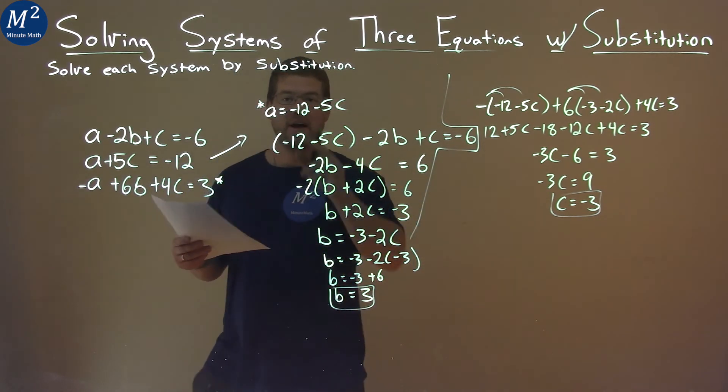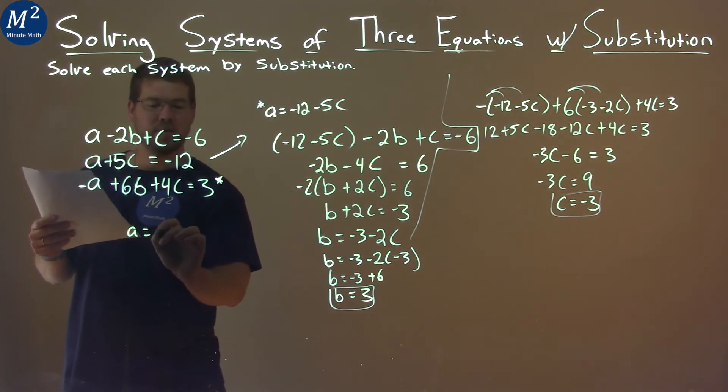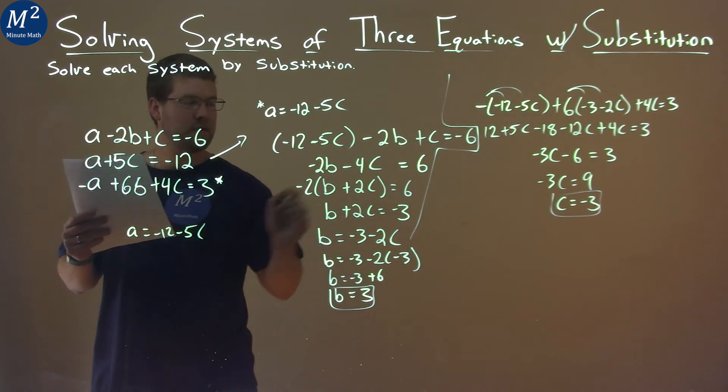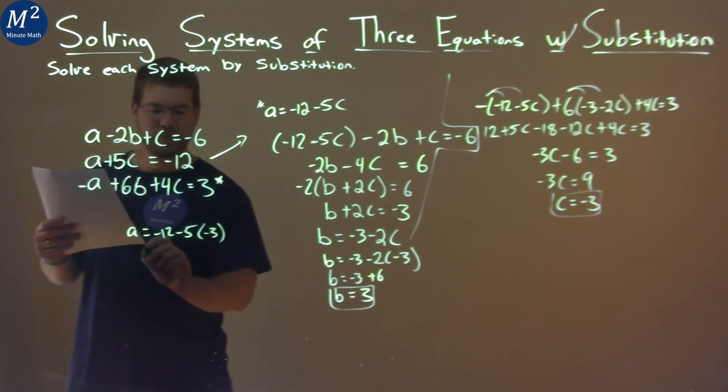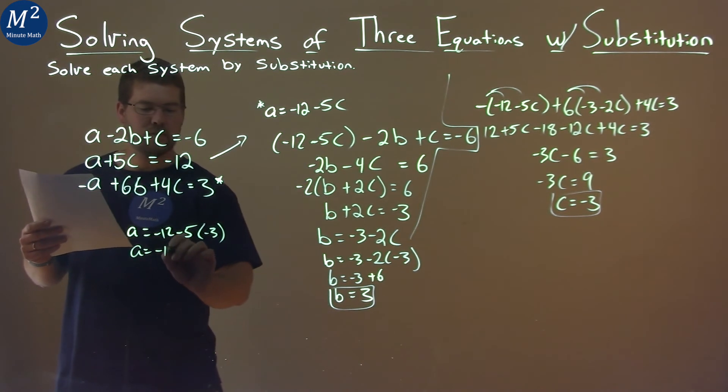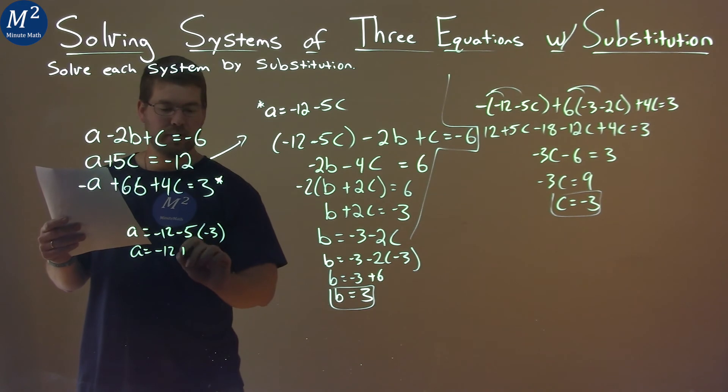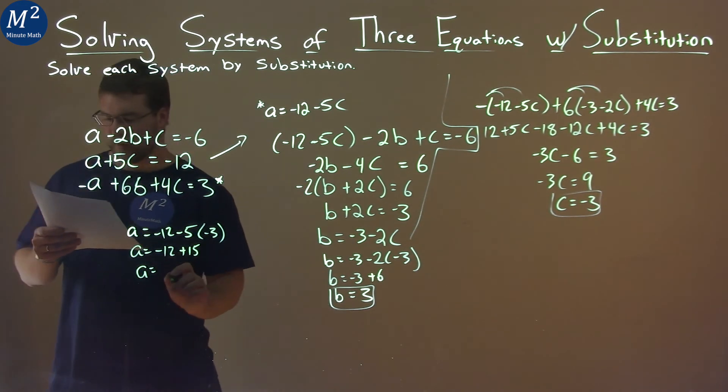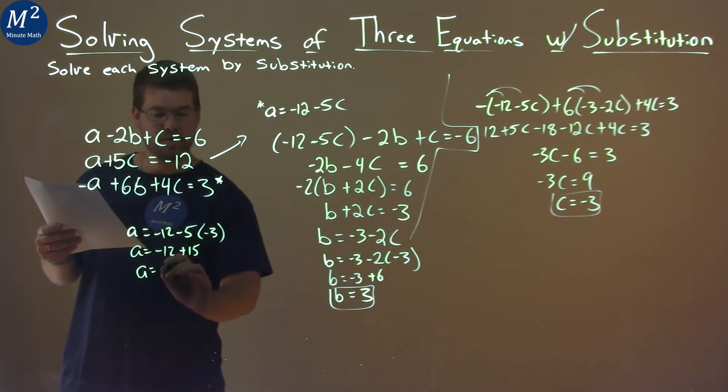And let's go find our A. So, let's rewrite what we have up here. A equals negative 12 minus 5. But instead of C, I'm putting negative 3 that we found. Negative 12 plus, because negative 5 times negative 3 is a positive, 15. And A equals, well, negative 12 plus 15 is a positive 3.